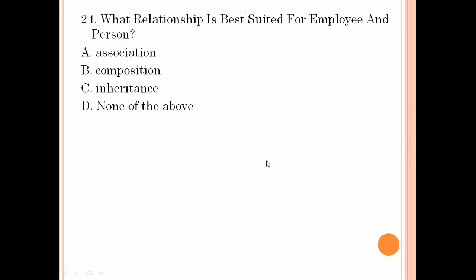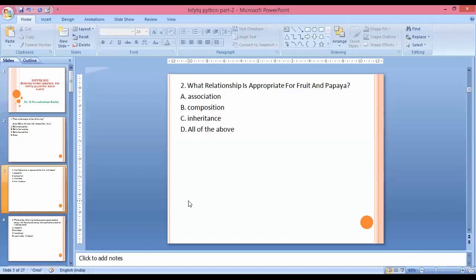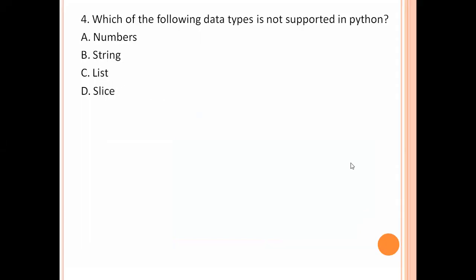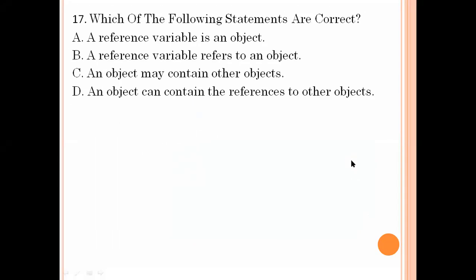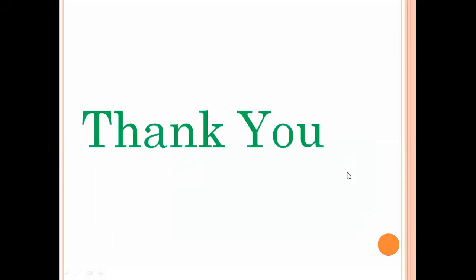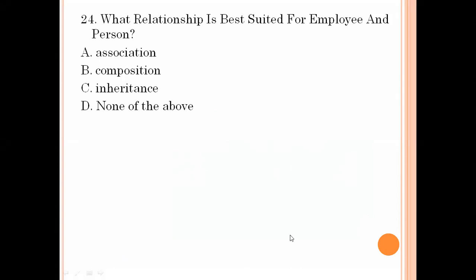What is the relationship best suited for employee and person? From persons, one of the persons is an employee — so it is inheritance. Option number C is the right answer — inheritance.